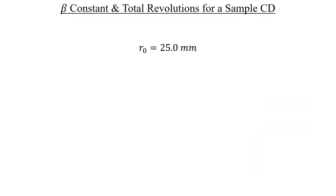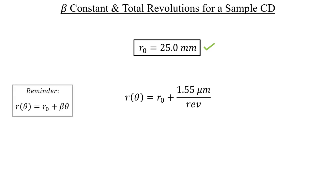We have this sample CD which has an inner track radius of 25 millimeters which is exactly what r-naught represents. So, there's one part of the answer right off the bat. That's pretty easy. We're also told that for every revolution the radius of the spiral track will increase by 1.55 micrometers. Remember that the radius of that spiral track as a function of theta is equal to this expression. Let's take that and plug it in on the left hand side and use it to solve for beta.